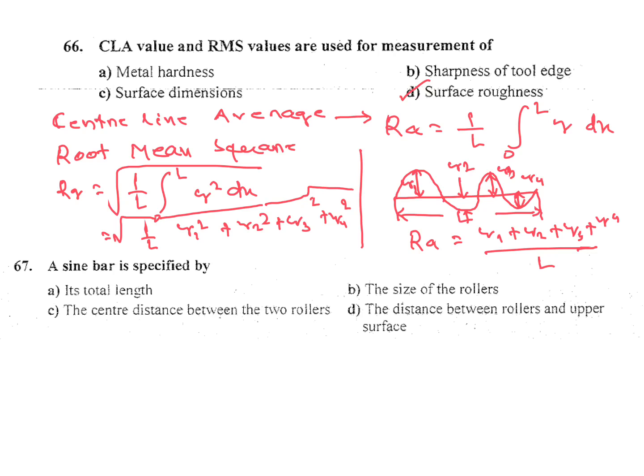A sine bar is specified by its total length, the size of roller, the center distance between two rollers. See the answer, sine bar, two rollers are like this. For angle measurement we are using sine bar. This one also asked, sine bar we are using for what purpose. This is center distance between two rollers L.